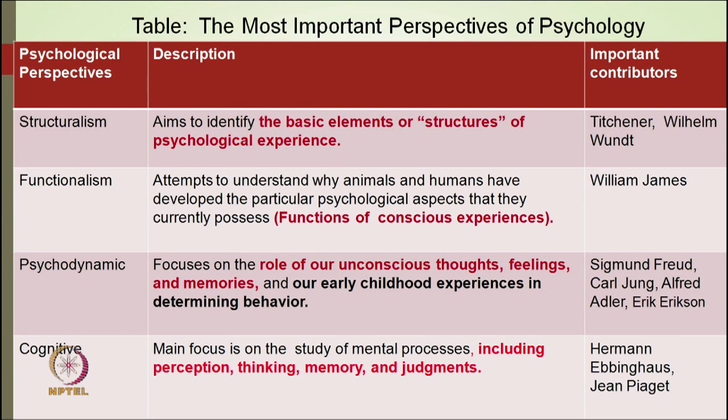Different psychologists have addressed behavior and cognitive processes differently. There are various schools in psychology, each with a unique style to address behavior and cognitive processes. For example, the first perspective is structuralism, with important contributors Titchener and William Wundt. It aims to identify the basic elements or structures of psychological experiences. Another school, functionalism, focuses more on the functions of mind, with William James as an important contributor.